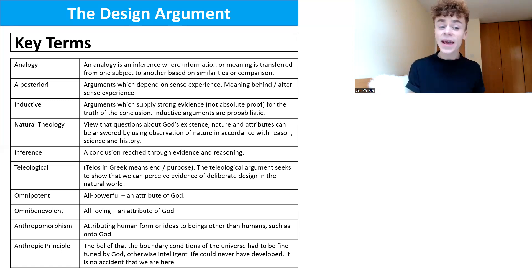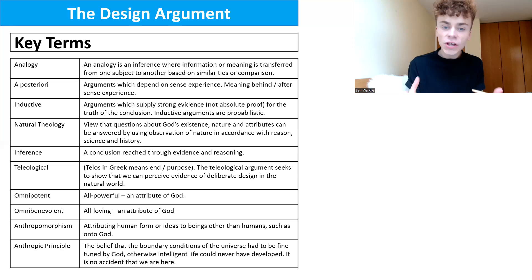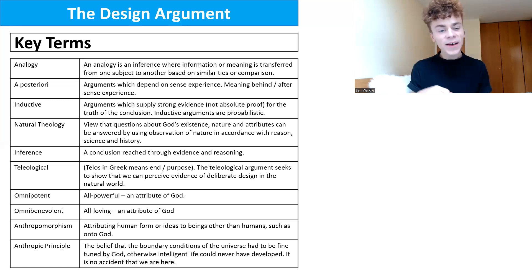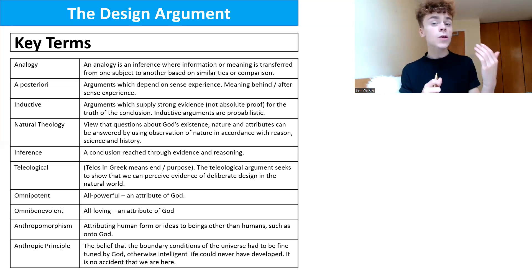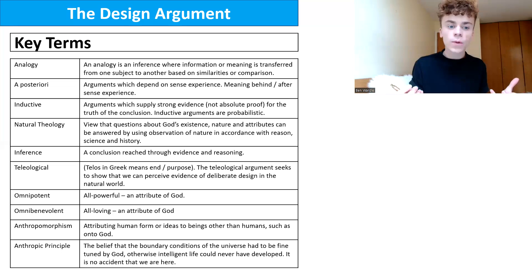Inference is a conclusion reached through evidence and reasoning. Telos in Greek means end or purpose, so the teleological argument seeks to show we can perceive evidence of deliberate design in the natural world — that there is a purpose behind it. Omnipotent means all-powerful, and omnibenevolent means all-loving. We'll be asking what this argument tells us about the nature of God.